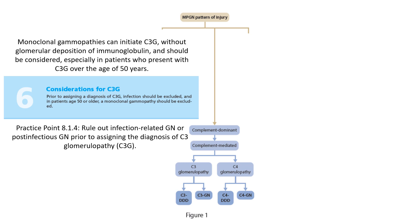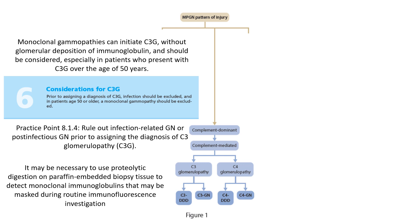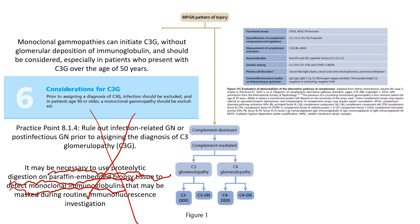Monoclonal gammopathy can initiate C3 glomerulopathy without glomerular deposits of immunoglobulins — that is why it must be excluded. An important note for the pathologist: monoclonal immunoglobulins may be masked and not appear during routine immunofluorescence investigation. Therefore, the pathologist must use proteolytic digestion on the paraffin-embedded biopsy to detect masked monoclonal immunoglobulins. If no infection or monoclonal gammopathy is found, you must search for genetic abnormalities and mutations in complement mediators and regulators.